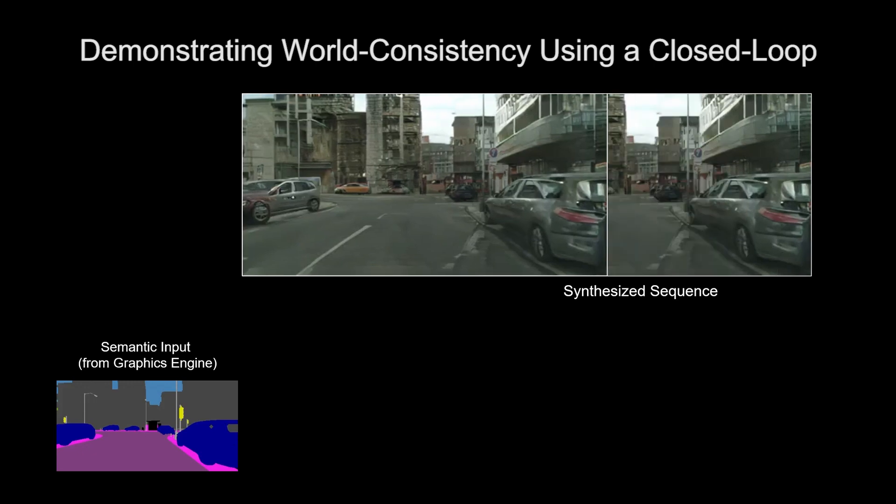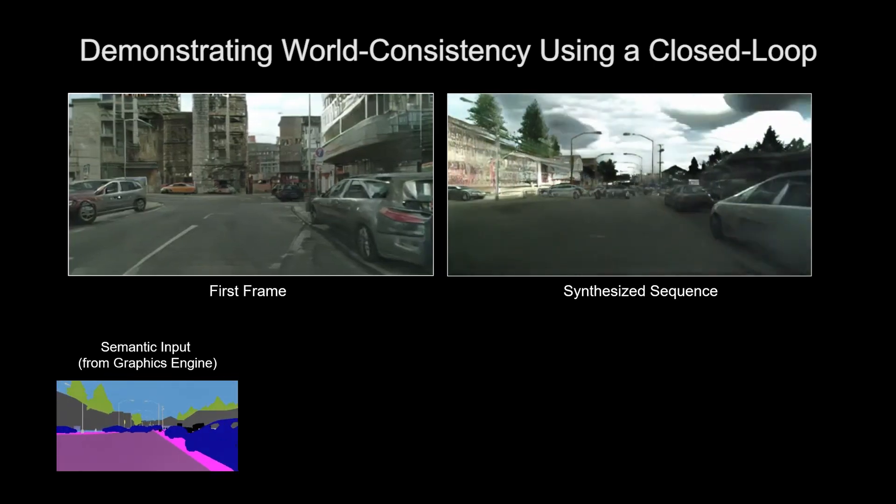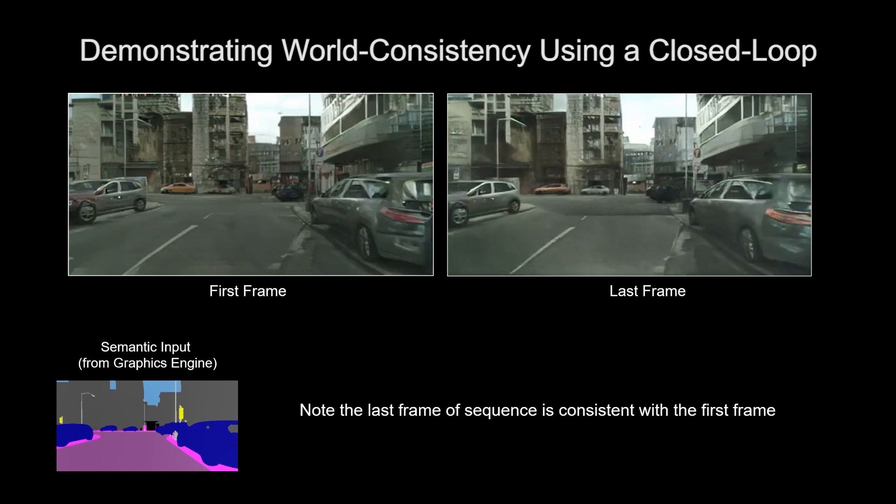Moreover, we can demonstrate the world consistency using a closed loop in a virtual world. When we make a circle and go back to the original location, the rendered frame can still remain the same as the first frame in a sequence.